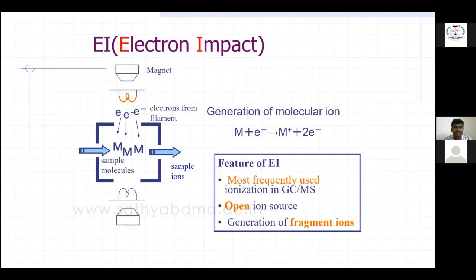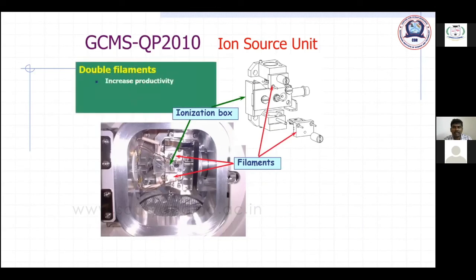EI generates many fragment ions. The ionization reaction is: M + e⁻ → M⁺• + 2e⁻. So the molecule M gains a charge, producing a radical cation. This ionization produces a new unit. For analysis of pure samples, the sample can be directly injected into the mass spectrometer without GC separation — since GC is only for separation purposes. If you have a mixture, use GC first. If you have a pure sample, use a direct sample injector.